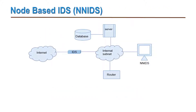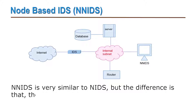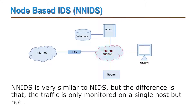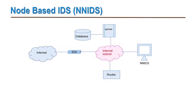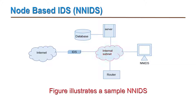The node-based one, NNIDS, is very similar to NIDS, but the difference is that the traffic is only monitored on a single host and not on the whole subnet. Here is a figure that illustrates NNIDS.